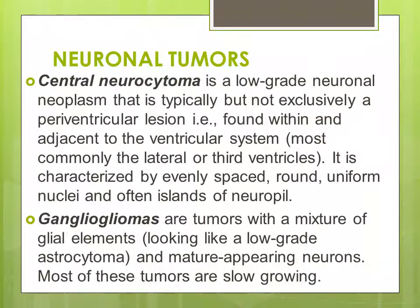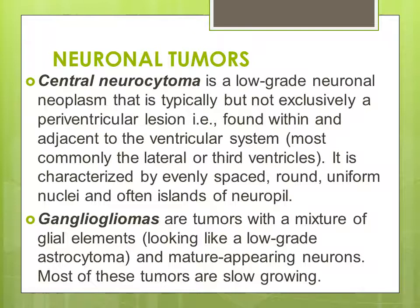Central neurocytoma is a low-grade neural neoplasm that is typically — but not exclusively — a periventricular lesion found within the adjacent ventricular system, most commonly in the lateral and third ventricle. It is characterized by evenly spaced, rounded, uniform nuclei and islands of neuropil. Ganglioglioma is a tumor with a mixture of glial and ganglionic elements, looking like a low-grade astrocytoma with mature neuronal appearance, and most of these tumors are low-grade.